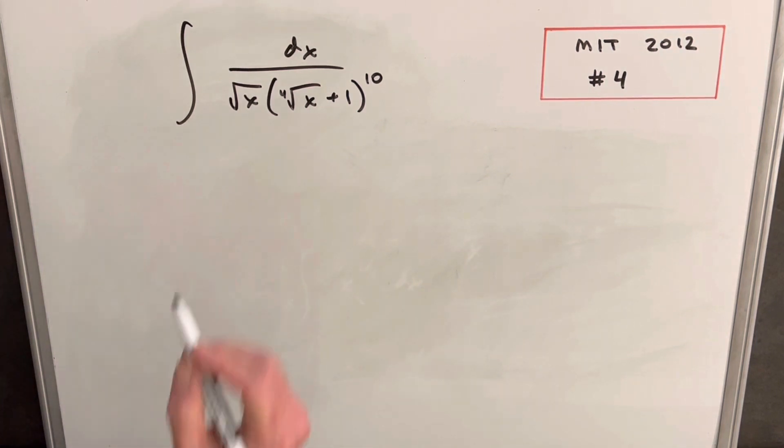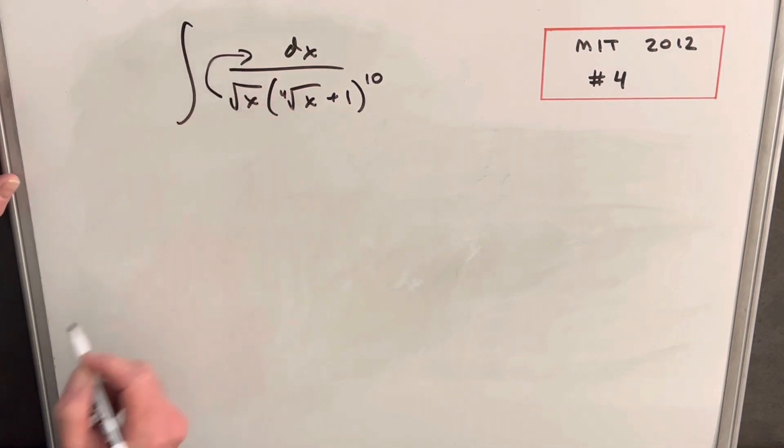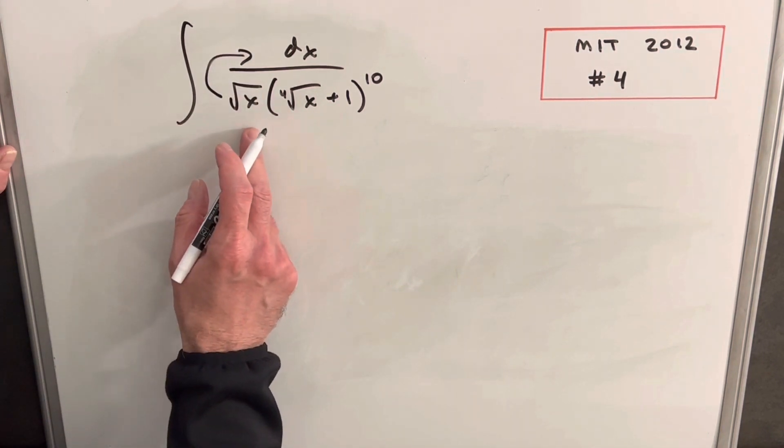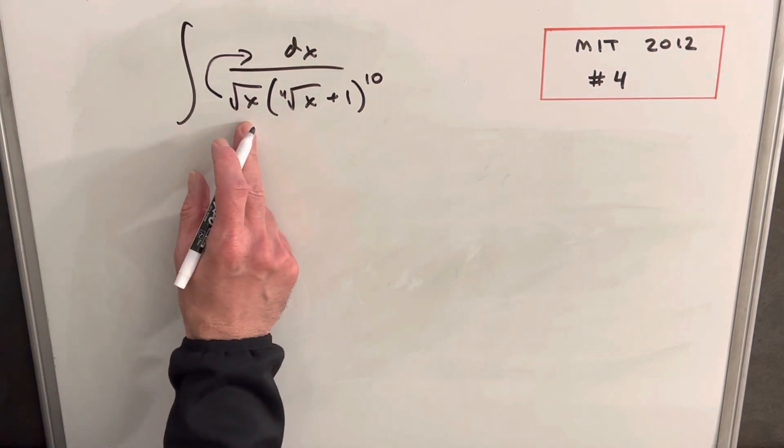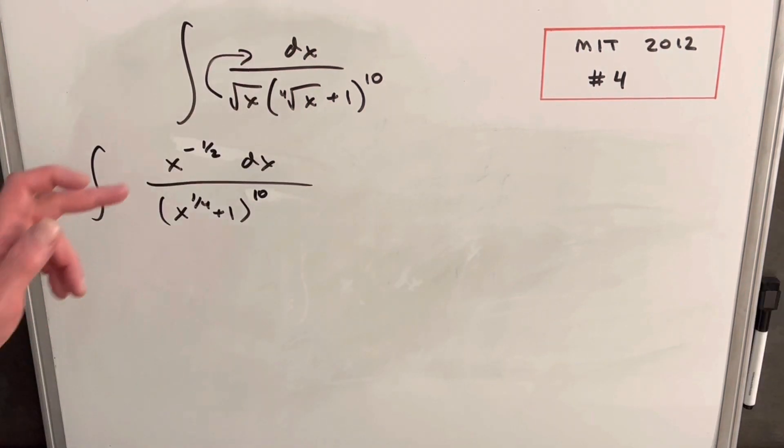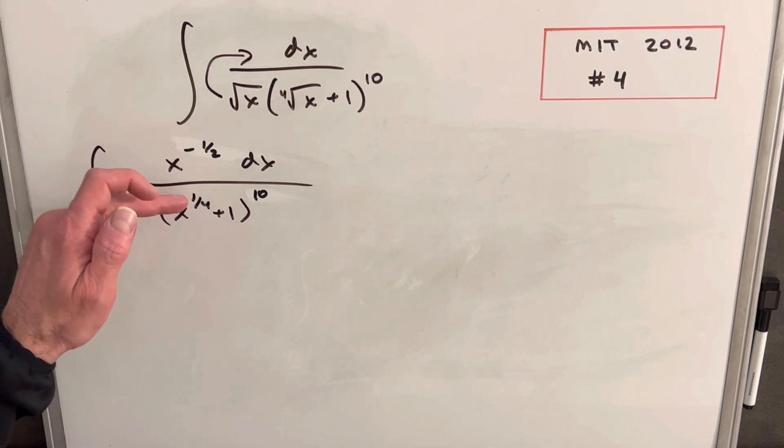What I want to do to start is bring this into my numerator and rewrite that in that form, because I think I want to set up a u-substitution that's going to make it a little cleaner if I put that in the numerator. Okay, so all I've done now is just explicitly stating my powers as fractions on my x here.